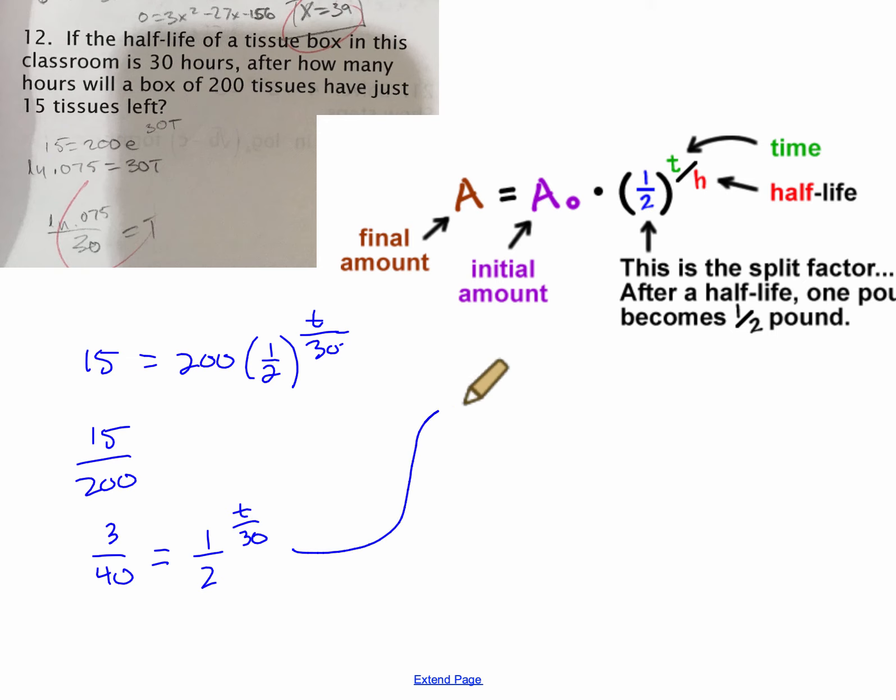So I'm going to move my work up here. And since the base here is one-half, I'm going to have a base of one-half with my logarithm. So I'm going to say log one-half of 3 over 40.